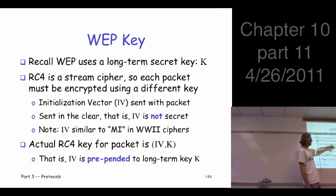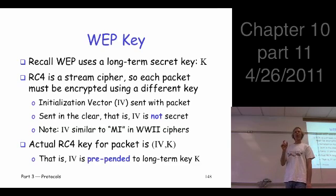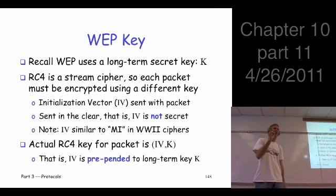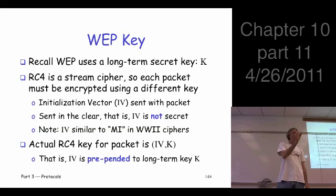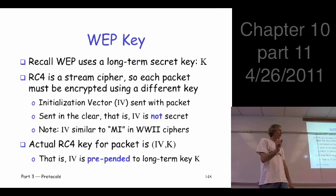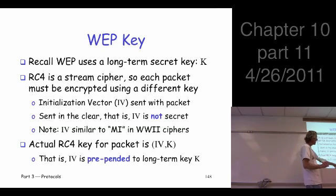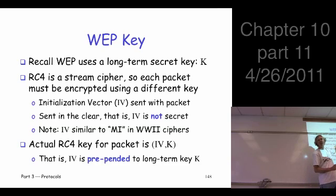People who designed WEP realized that, so they decided to use an initialization vector each time they encrypt. The initialization vectors are not secret — just like in other modes of encryption — and they're sent as part of the packet. The way they use it with the stream cipher is to take the initialization vector and put it before the key. Same key K, used to authenticate and everything.